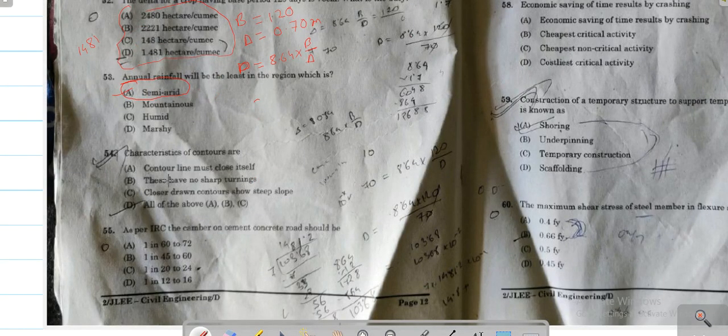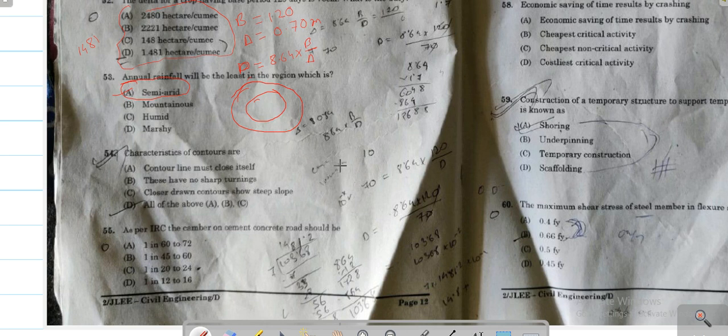Question number 54: Characteristics of contours are - control lines must close itself, as you draw contour, the contour will be enough, right? These have no sharp turning. That means contour will be no sharp type of turning.